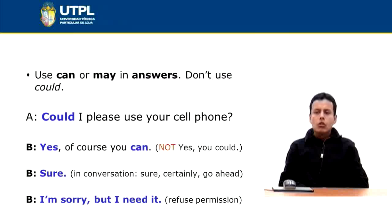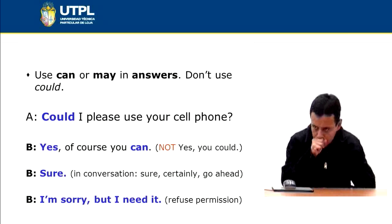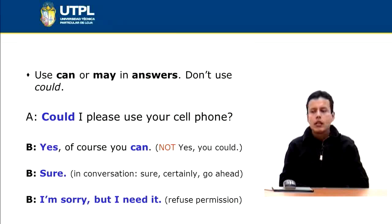Another possible answer: if someone asks 'Could I please use your cell phone?' you can respond with 'Sure,' 'Certainly,' or 'Go ahead.' Or another option for refusing: 'I am sorry, but I need it.' In the first two responses, the person is giving permission to use their cell phone. But in the last response, the person is refusing permission. These are examples of how to answer a question — whether giving permission or not giving permission.